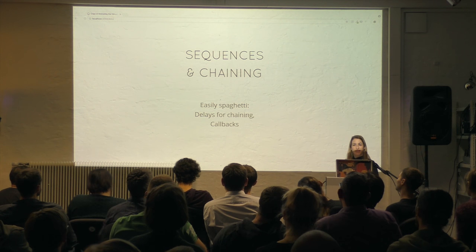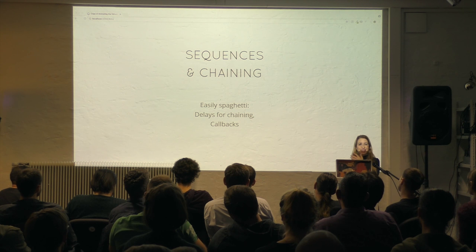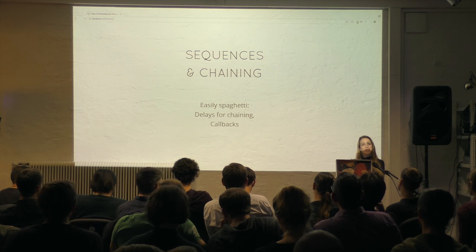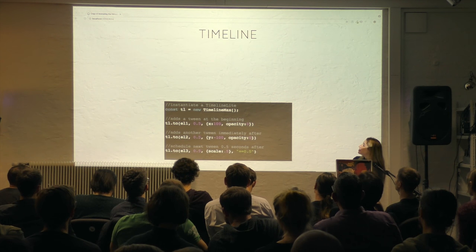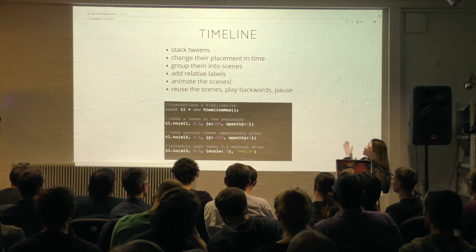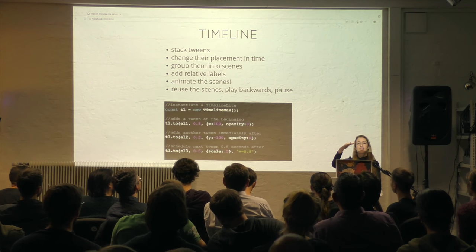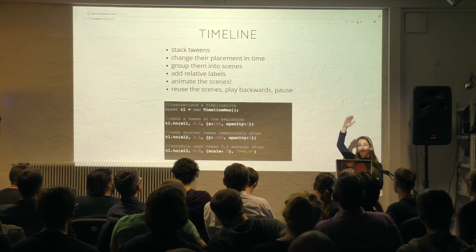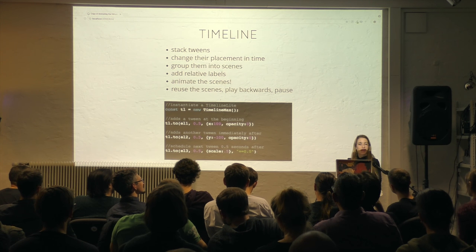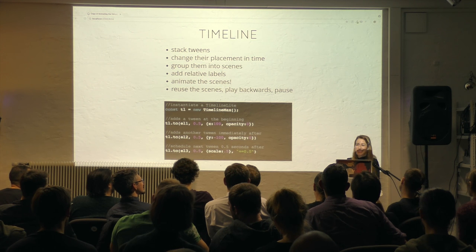Sequencing and chaining is one of my favorite parts of GreenSock. It's easy to make really spaghetti code when sequencing and chaining — you end up in callback hell or creating things based on delays. But GreenSock offers you a timeline that allows you to just manipulate all of those at once. When working with a timeline, we can stack tweens, change their placement in time, group them into scenes, and add relative labels. Relative labels let you insert a point in the play head where you want a bunch of things to fire, so that if anything changes before that in the timeline, they always stay together no matter what — even if you manipulate timing. And I keep talking about manipulating timing because if you're working with animation, that's all you do. We're just changing the timing and easing over and over again.